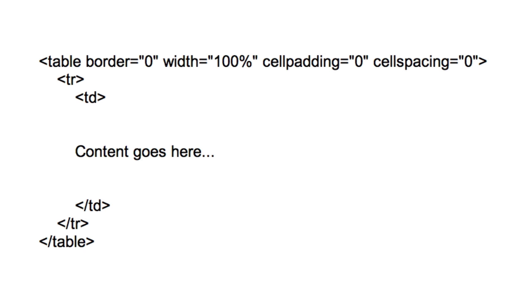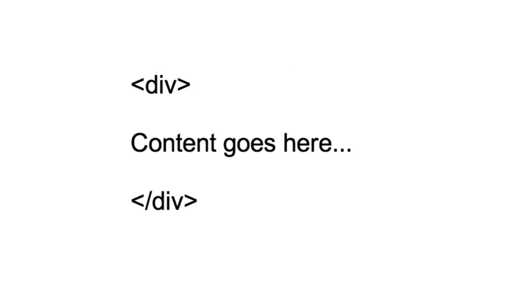Somewhere along those lines something was taken out of context and people started saying that tables are bad. What you need to remember is that at no point did anyone in the web standards movement actually say tables are bad. They were just saying there's a better, more efficient way to code your website without using all this markup — using divs to create similar layouts — which makes your code cleaner, more efficient, and your page will load faster. But something was taken out of context and everyone ran with the idea that tables are bad.